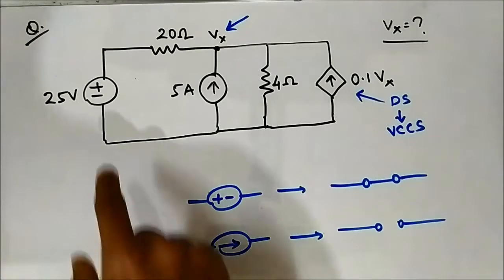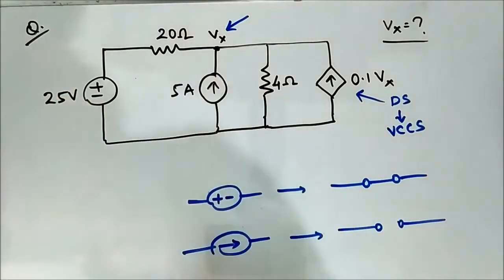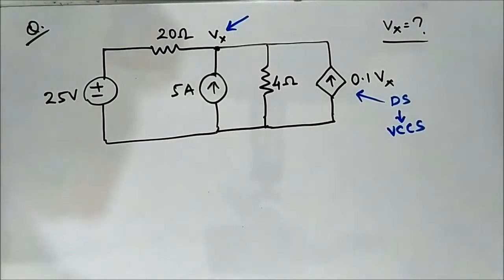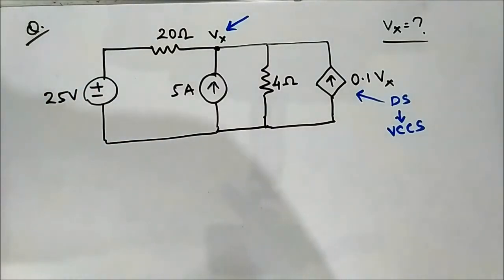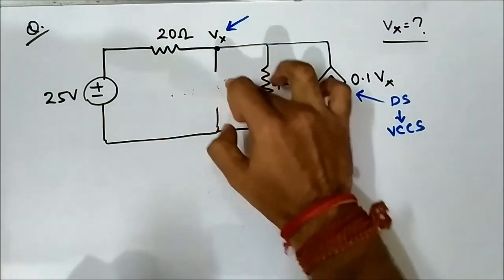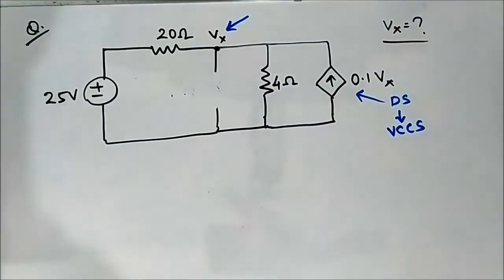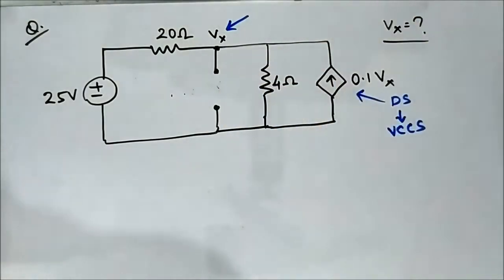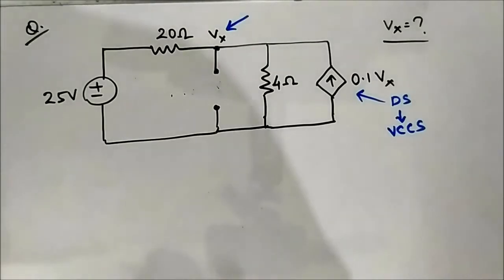There are two independent sources: 25 volt and 5 ampere. We consider them one at a time. First, let us consider the 25 volt voltage source by open-circuiting the 5 ampere current source. The dependent source is not touched — it is kept as it is. Now applying nodal analysis.